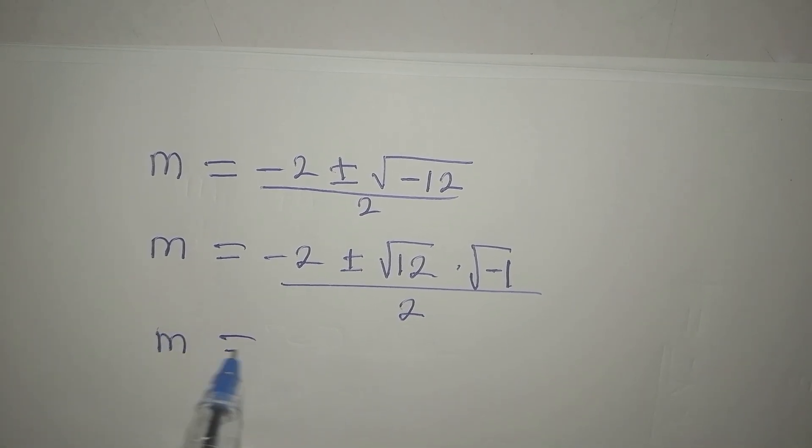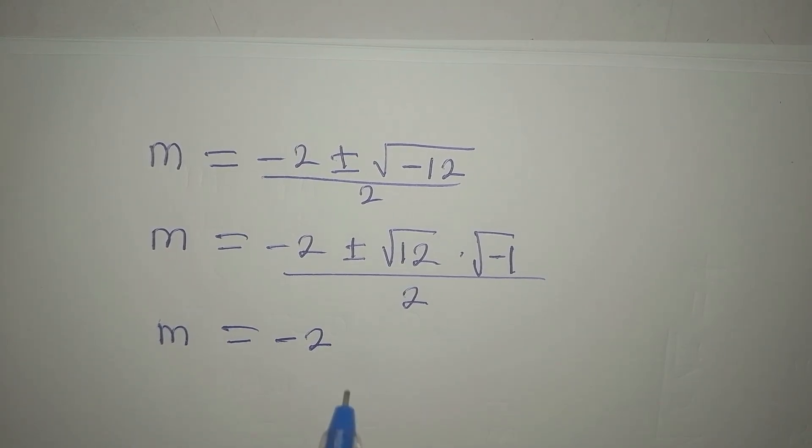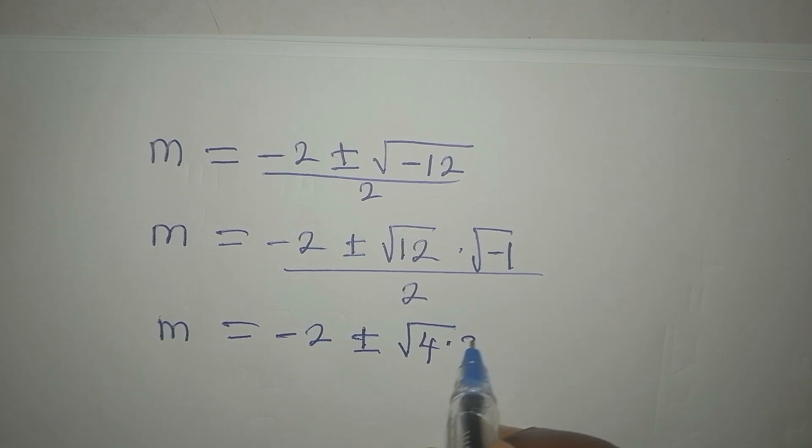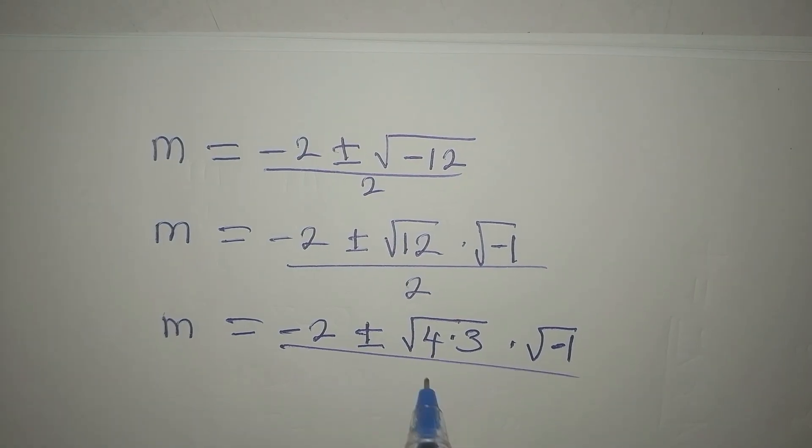What we'll do now is to simplify this root 12. So we have plus or minus root 12 is the same as 4 times 3, root 4 times 3. Then multiply by root of negative 1. And we divide by 2.